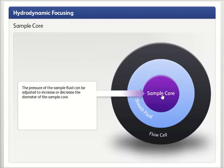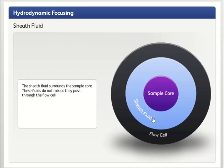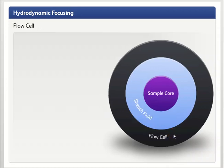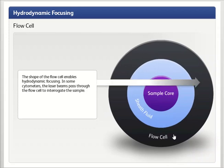The pressure of the sample fluid can be adjusted to increase or decrease the diameter of the sample core. The sheath fluid surrounds the sample core. These fluids do not mix as they pass through the flow cell. The shape of the flow cell enables hydrodynamic focusing.